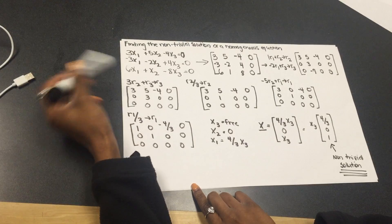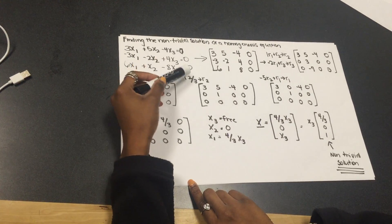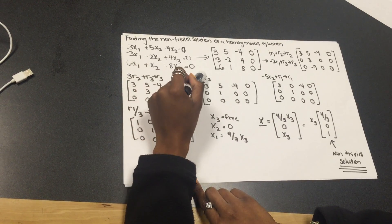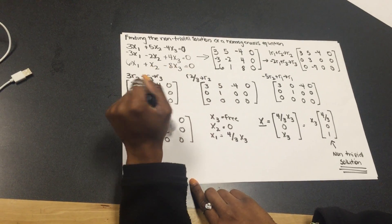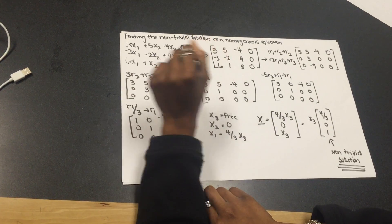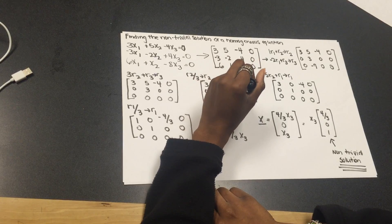Now, I have to get rid of this 3. To get rid of this 3, I divide row 2 divided by 3. Row 2 divided by 3, and then insert that into row 2. So, now you get, for row 2, now you have 0, 1, 0, and 0.